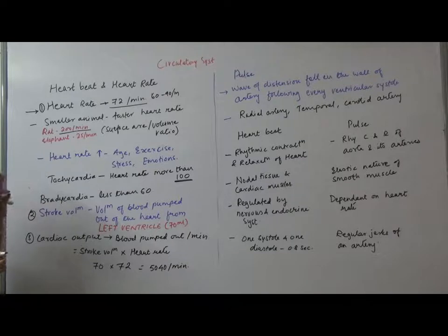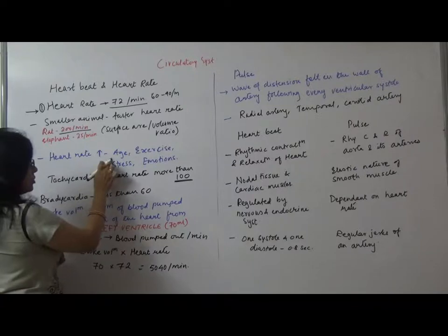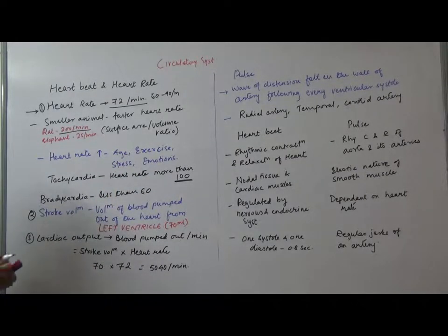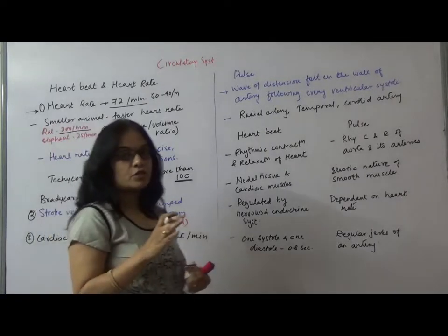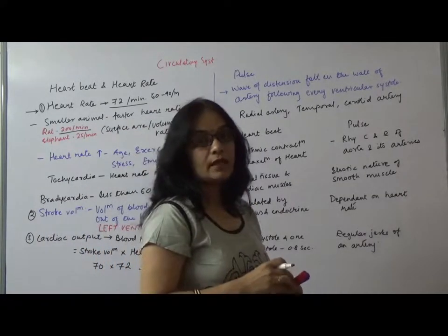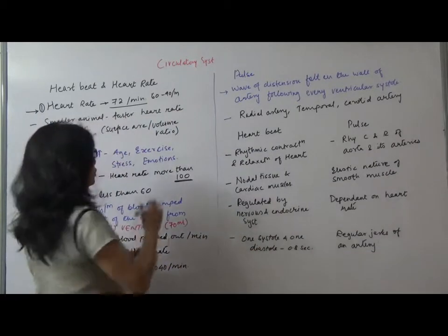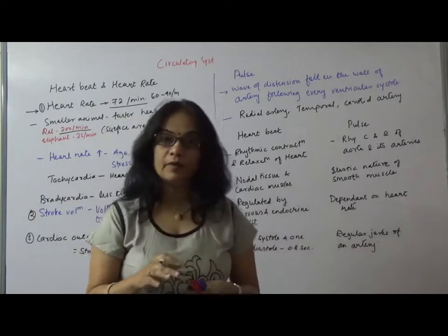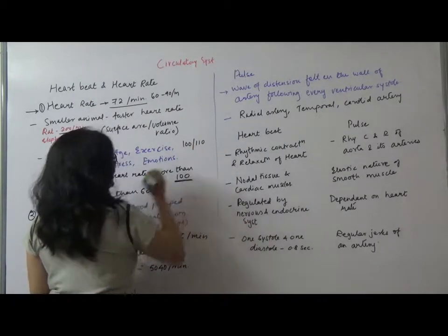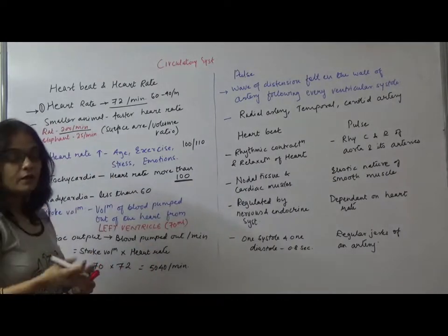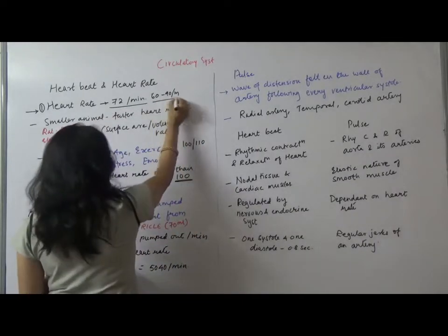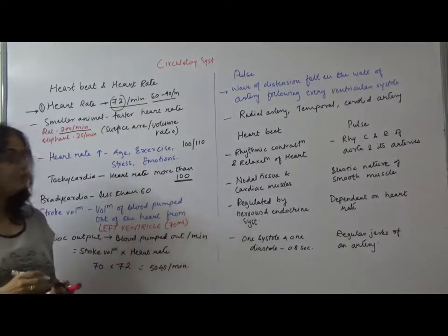Now, heart rate may increase during certain conditions. Age, exercise, stress and emotion increase the heart rate. Children who are 10 years old may have around 100 or sometimes very small children, just 1-2 years old, their heart rate may go up to 110. But children about 10 years old and adults generally have heart rate on average of 72 per minute.